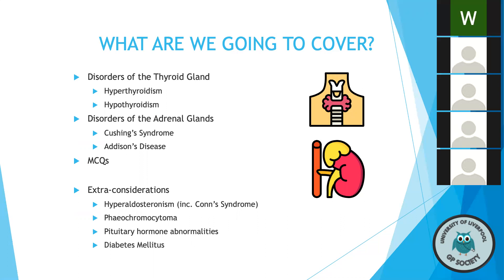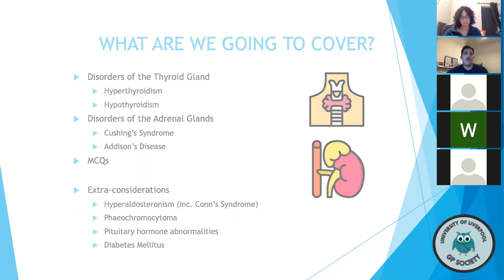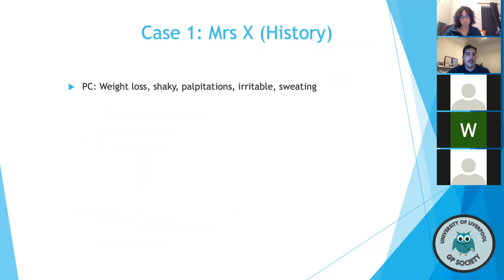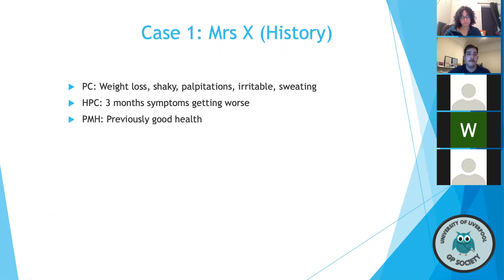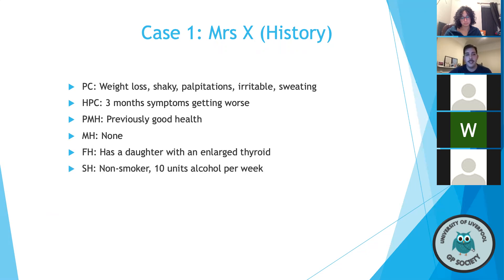So first, let's start with a case. A lady presents with weight loss, shaking, palpitations, irritability, and sweating. On history of presenting complaint, you find she's had these symptoms for a number of months and they've been getting progressively worse. She's usually in good health, not on any regular medications, and she has a daughter with a history of thyroid disease — specifically an enlarged thyroid. She's a non-smoker and drinks 10 units of alcohol per week.